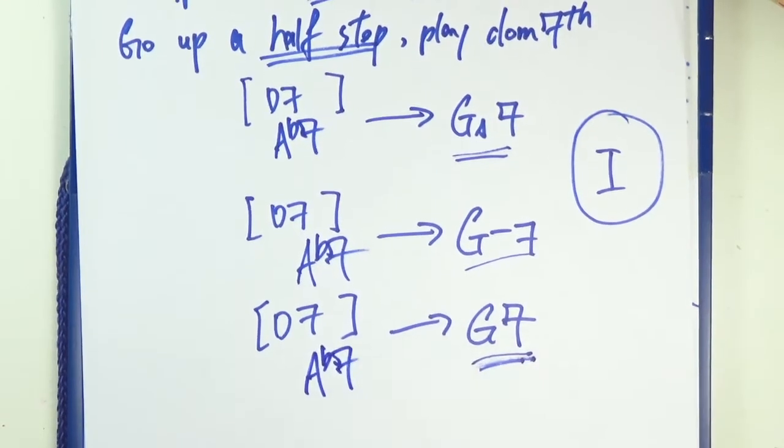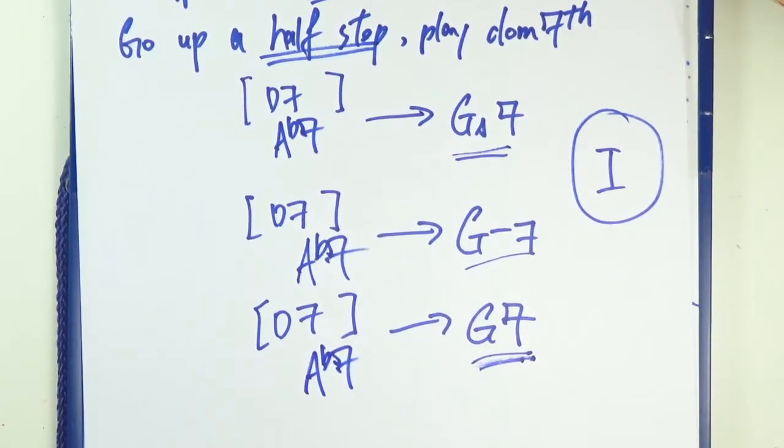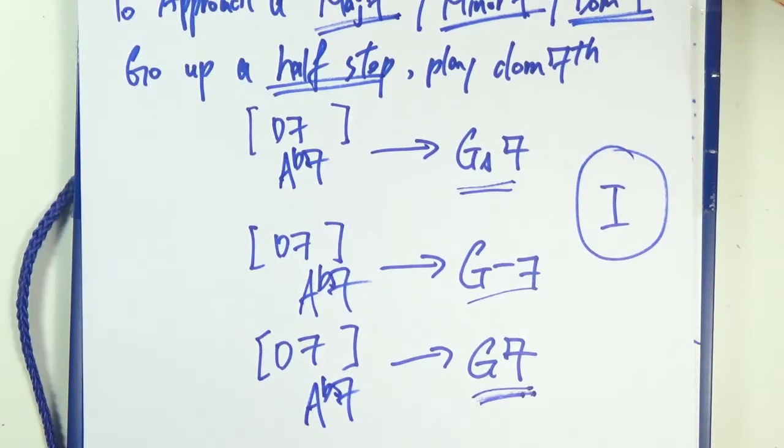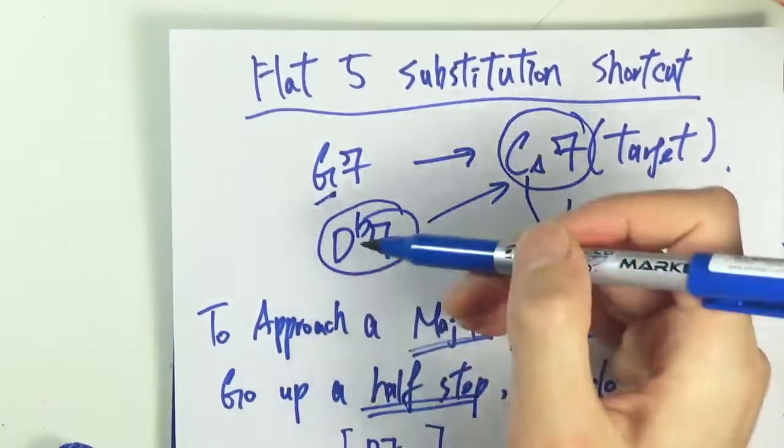In the future, whenever you see a one chord and you want to produce a flat five sound, just go up half a step and play a dominant seven chord. That would act as a substitute for the five chord. Just to elaborate even more, the flat five sub and the five seven substitution, they're really similar chords in terms of chord tone.